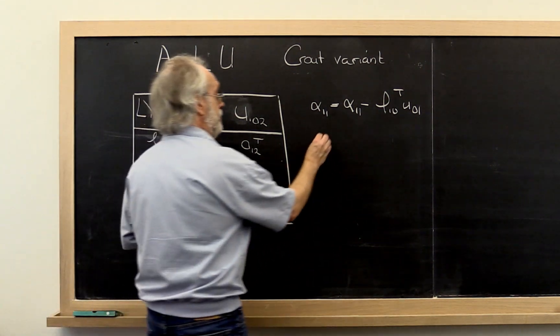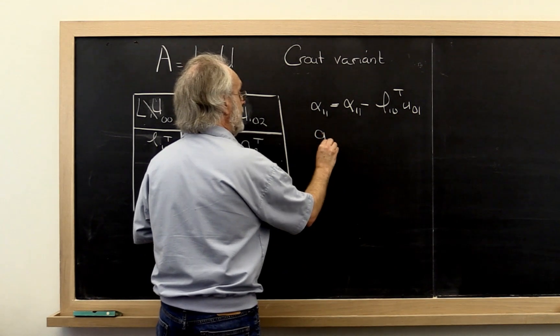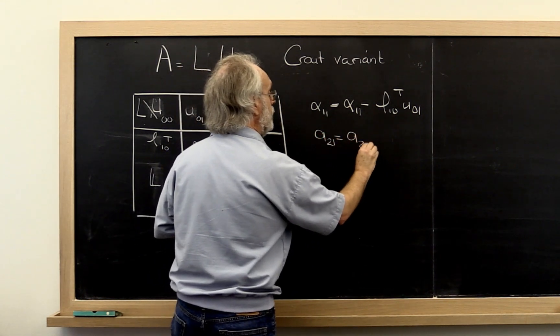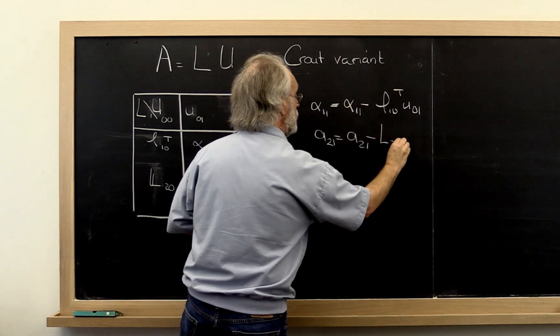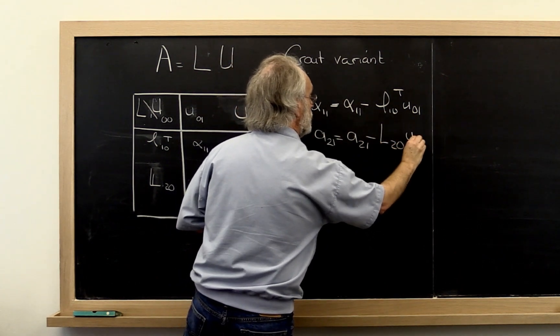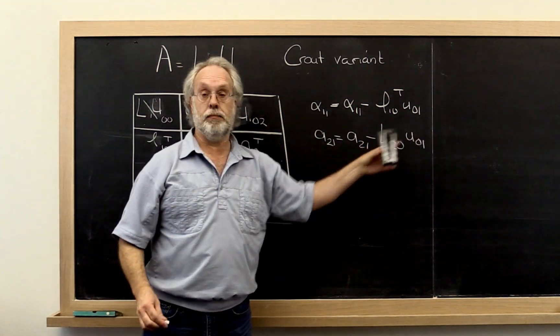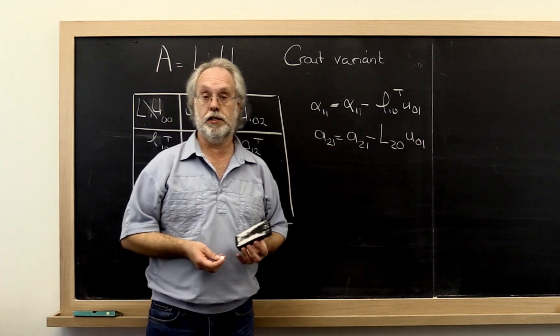A21 has to be updated by subtracting off L20 times U01. That's a matrix vector multiply. We have error results for that.